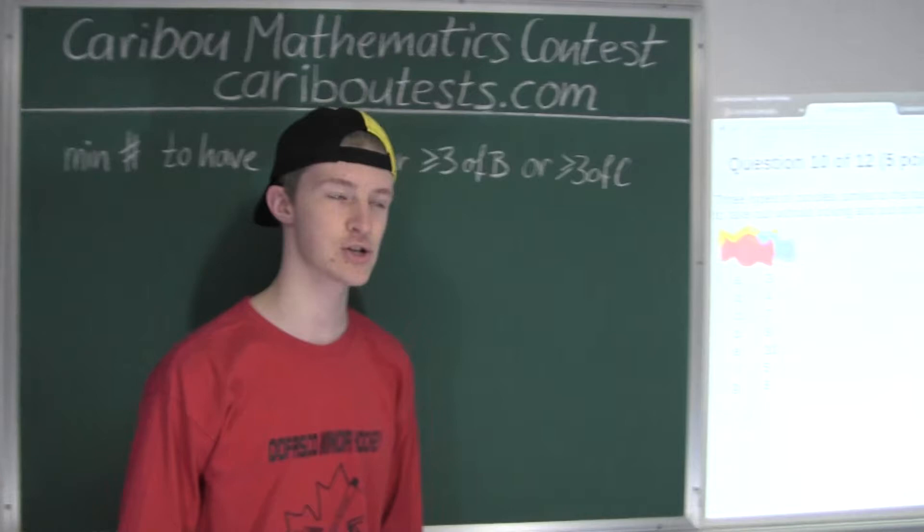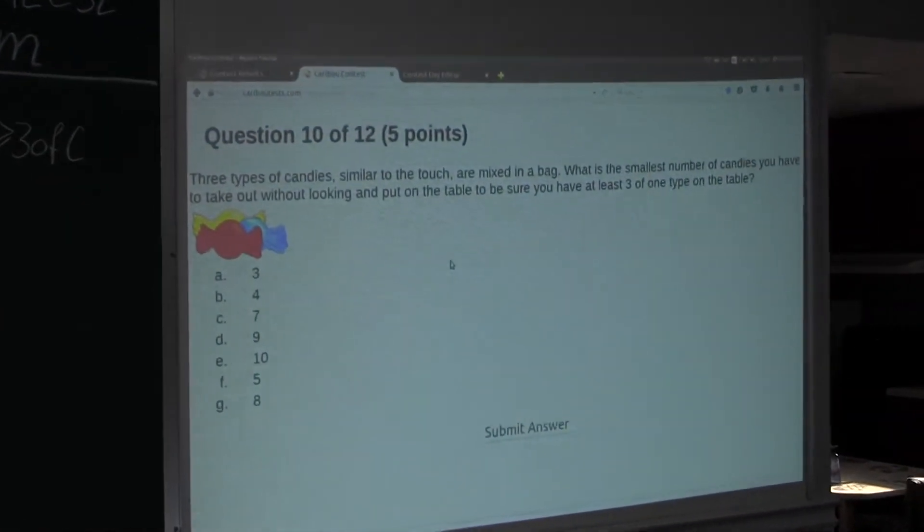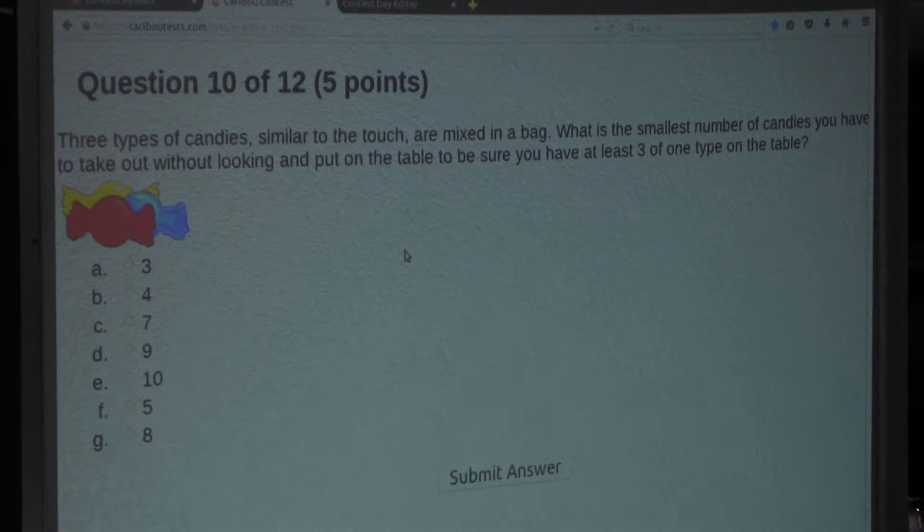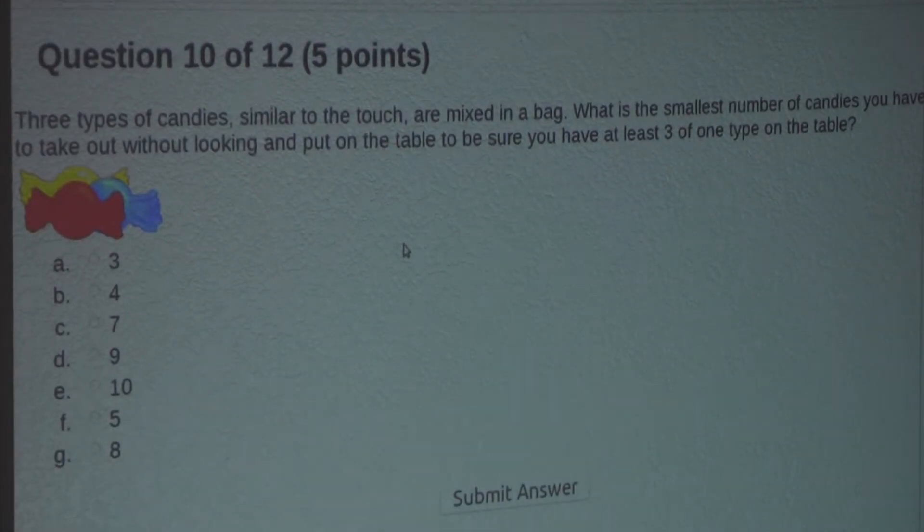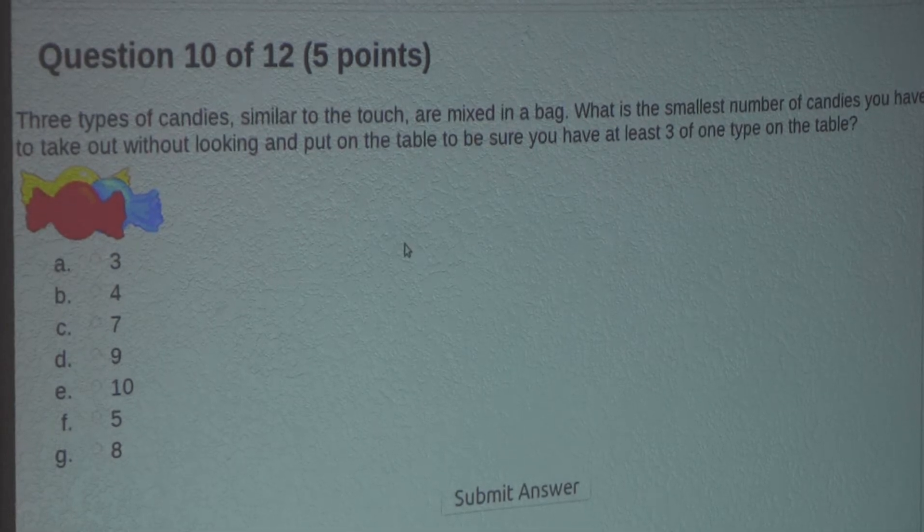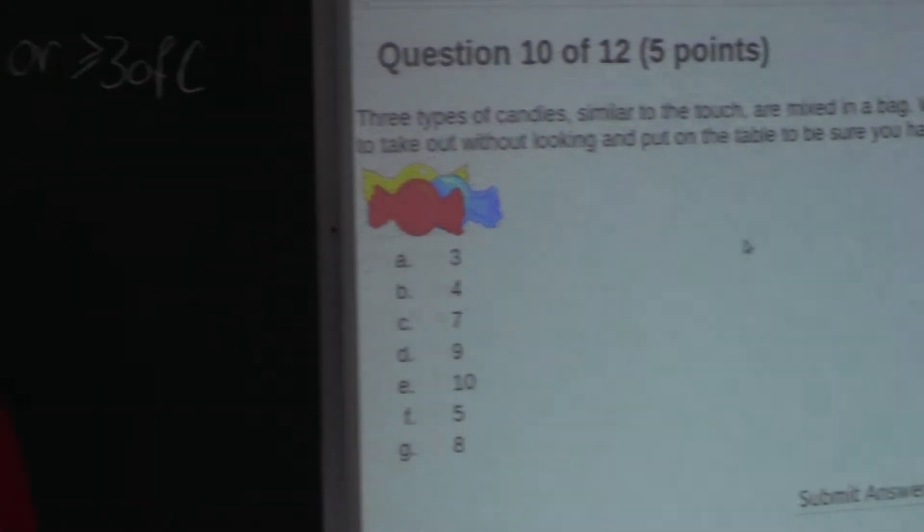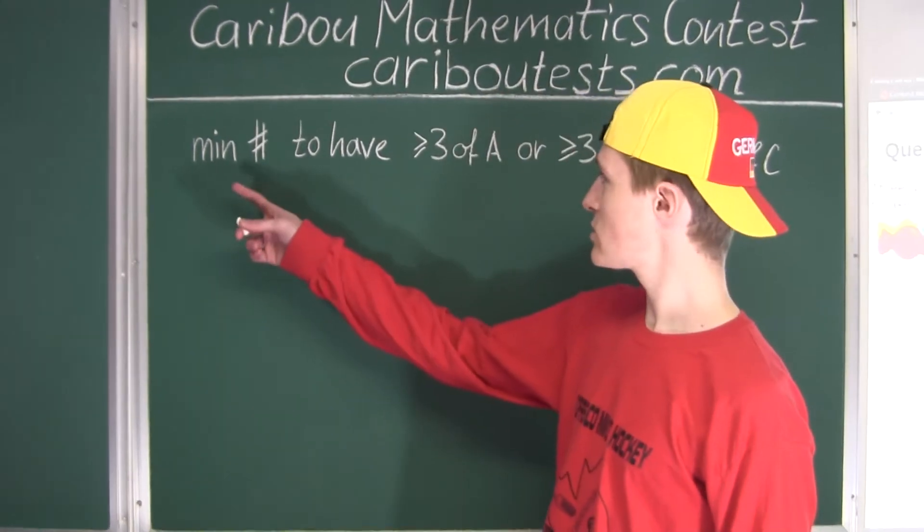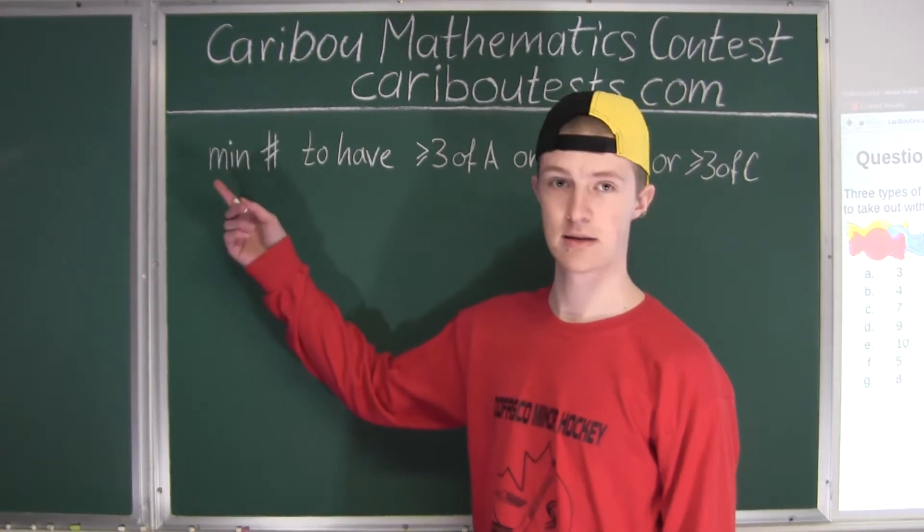So the question is: three types of candies, similar to the touch, are mixed in a bag. What is the smallest number of candies you have to take out without looking and put on the table to be sure you have at least three of one type on the table?